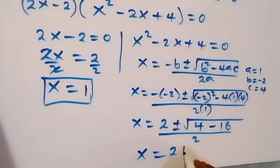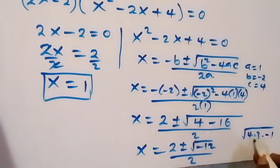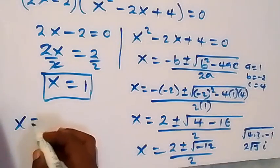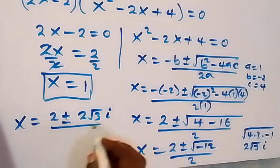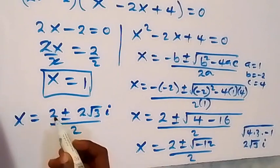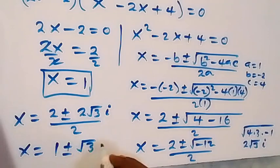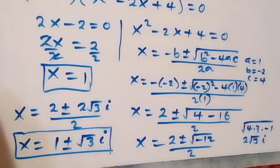This gives x equals 2 plus or minus square root of minus 12, over 2. We can write root of minus 12 as root(4 times 3 times minus 1), which equals 2√3·i. So x equals (2 ± 2√3·i) / 2, giving x equals 1 plus or minus √3·i. These are two complex solutions from Case 1.